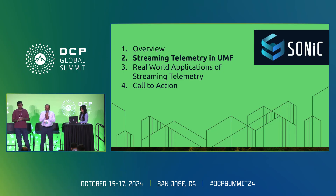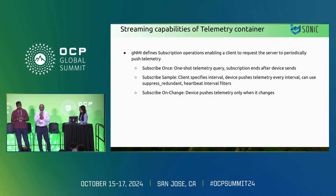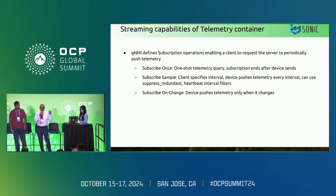We have a requirement to stream multiple types of data — state information, operational information, counter information — out of any switch to the controller. In order to stream different types of data, one streaming method is not sufficient. We need multiple ways to stream the data out. So we have provided multiple ways to stream out the data from the GNMI server.